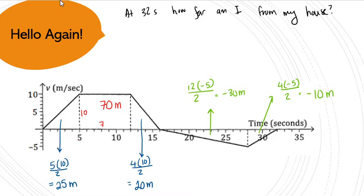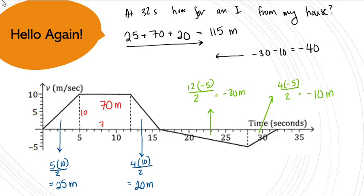So, what is this telling us with distance? On a velocity-time graph, if the curve is positive, that means you're moving away from something. But if the curve is negative, you're walking back. So, how far away am I? I went 25 plus 70 plus 20 away for a total of 115 meters away from my house. And then I walked back 30 and another 10 equals negative 40 meters. So my total distance from my house right now, 115 minus 40 equals 75 meters.